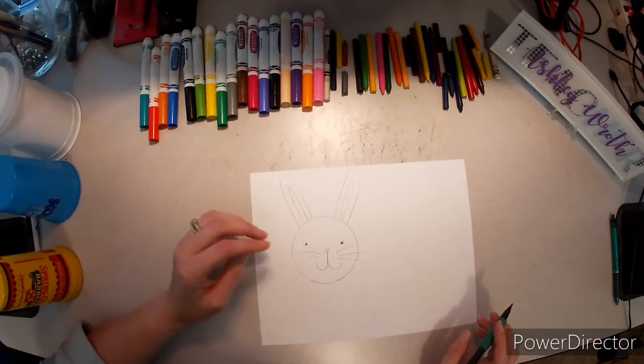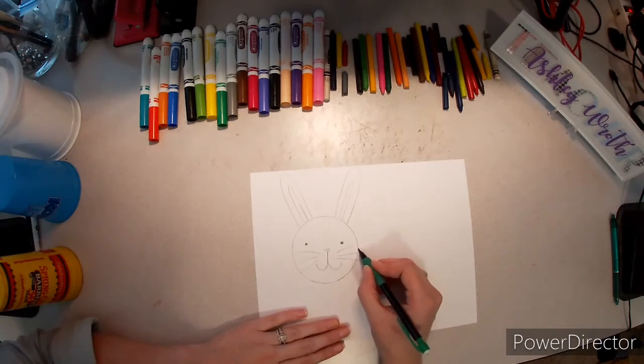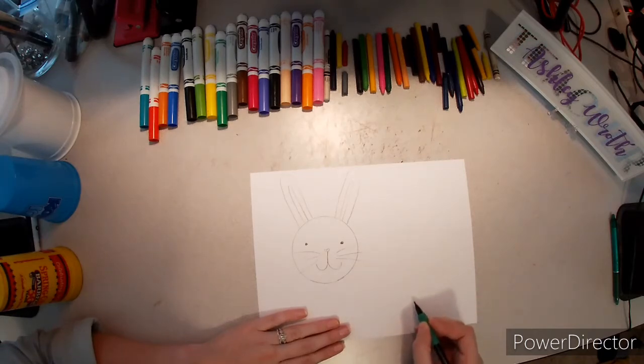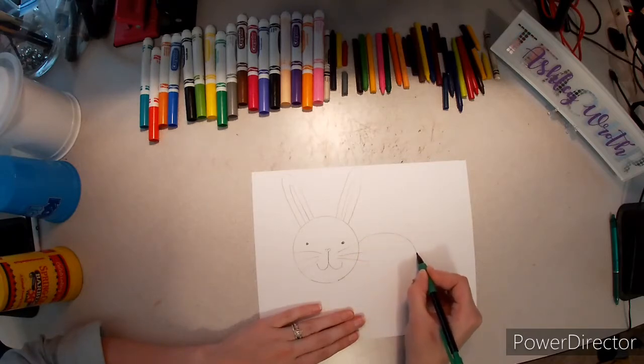Now for our rabbit's body. We are going to start on the side here, and we are going to go up, around, and down.